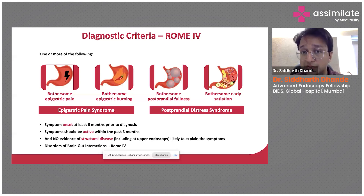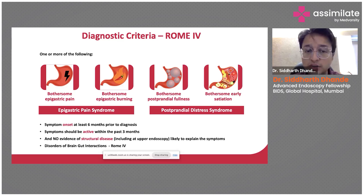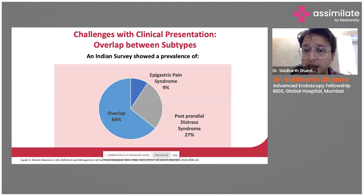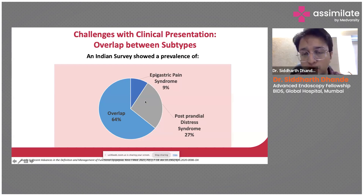The same applies to post-prandial distress syndrome: there is post-prandial bothersome fullness and bothersome early satiety. These are two different entities as per the diagnostic criteria, and have been renamed as disorders of brain-gut interactions rather than functional dyspepsia. However, in clinical practice there is going to be overlap — an Indian study has shown that up to 60% of patients will have overlap between these two syndromes.